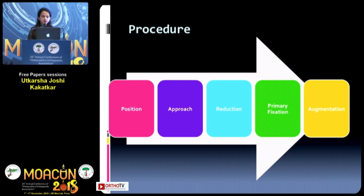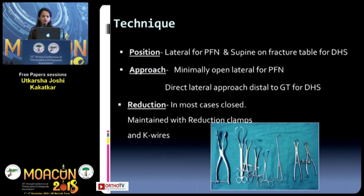The procedure consists of position, approach, reduction, primary fixation, and augmentation. The position was lateral for the proximal femur nail and supine on a fracture table for the DHS. The approach was minimally open lateral for PFN and direct lateral approach distal to the greater trochanter for DHS. Reduction in most cases was carried out closed by traction and rotation, and maintained with reduction clamps and K-wires.